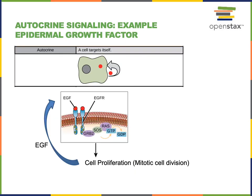Autocrine signaling is a type of intercellular signaling very similar to paracrine signaling. However, in autocrine signaling, the target cell is also the signaling cell. For example, when a signaling cell in the epidermis releases epidermal growth factor, that epidermal growth factor can bind to epidermal growth factor receptors on the same cell that secreted it, stimulating the cell division of the signaling cell itself.